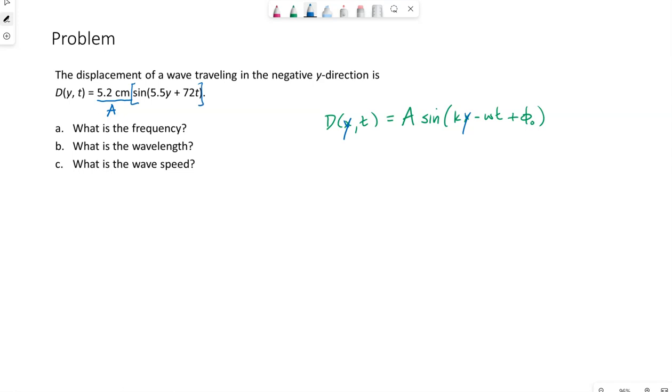For our sine function here, the y is replacing our x. So we can say that k, the wave number, is equal to 5.5. We assume SI units, which would mean this would be in radians per meter. We know k equals 2π over λ. That is our general equation. So we're able to solve for our wavelength. 2π over 5.5 gives us 1.14. We really only have two sig figs, so our wavelength is 1.1 meters. We've calculated part B first, which is totally fine.